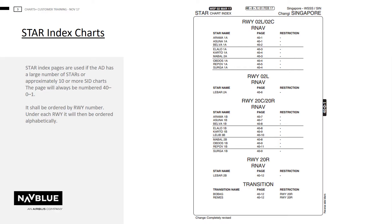Similar to the SIDs Chart Index page, if the aerodrome has approximately more than 10 STAR charts, then a STAR index chart will be created with the page number 40-0-1.